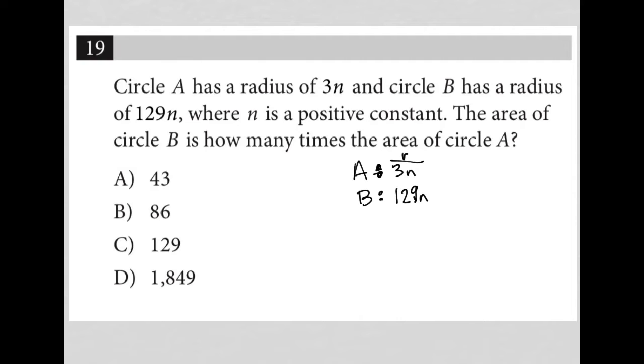Where n is a positive constant. The area of circle B - what is the area of circle B? Well, the area of circle B would be area equals pi R squared. We know that R is 129, so this turns into pi times 129n squared.